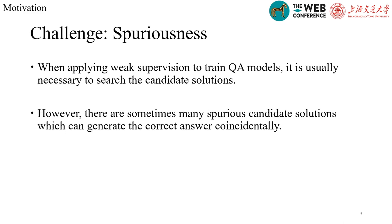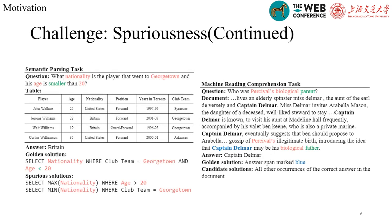However, there are sometimes many spurious candidate solutions which can generate the correct answer coincidentally. For example, in the semantic parsing tasks, we have a question, a table, and the answer. After we find the candidate solutions which can lead to correct answers, we find that many of these solutions are spurious ones which can execute to get the correct answer, but they don't express the semantic meaning of the question. Also, in machine reading tasks, the answers may appear multiple times in the document, but only one of them has the correct context associated with the question.